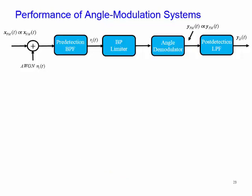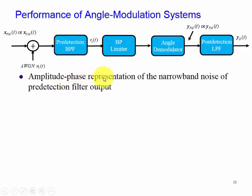So let's look at the amplitude-phase representation of narrowband noise coming out of the pre-detection filter output. In other words, R₁(t). So we see that R₁(t) consists of two components: one due to the carrier with the embedded message in the angle, and n(t).